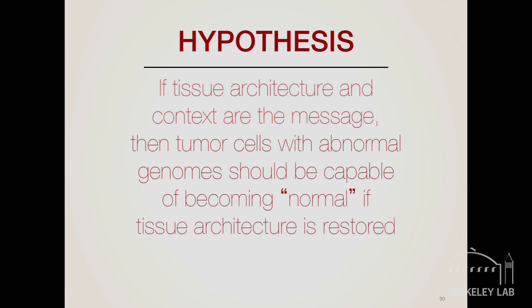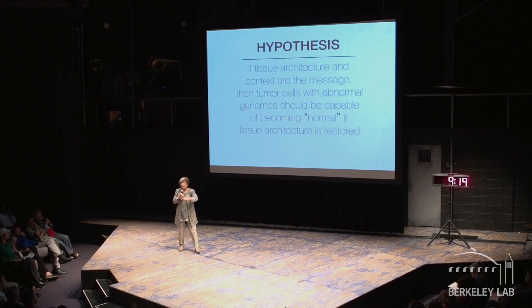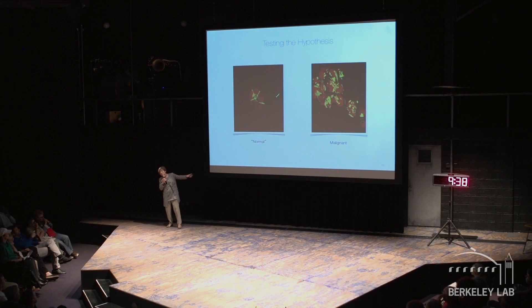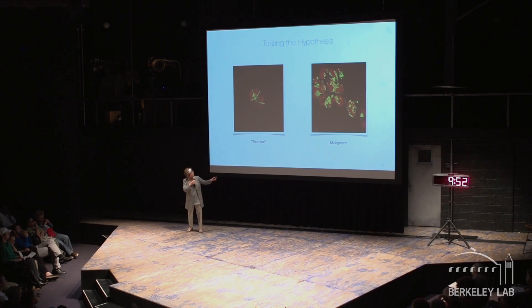We made a hypothesis: if architecture is the most important thing, we should be able to take a cancer cell, give it the right context, and it should think it's normal. Alternatively, we could take a mouse, destroy the structure without giving it a cancer gene, and it should become tumorigenic. We have done both. Here are the non-malignant cells making this beautiful structure — these are the nuclei, this is the cytoskeleton, they make an acinus. Here are malignant cells. When we measured what was at the surface, we found malignant cells had completely lost the balance of molecules at their cell surface.